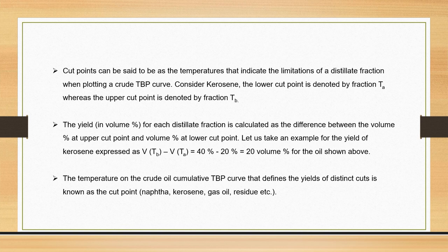For example, if we consider kerosene and name the lower cut point as TA and the upper cut point as TB, we can calculate the yield in volume percent for each distillate fraction by taking the volume at TA and volume at TB and subtracting them — so we get 20 volume percent for the kerosene. The temperature on the crude oil cumulative TBP curve defines the yield of distinct cuts known as cut points — that is, naphtha, kerosene, gas oil, residue, etc.